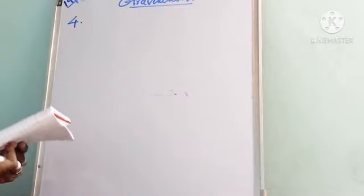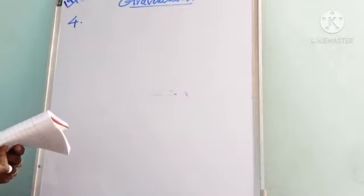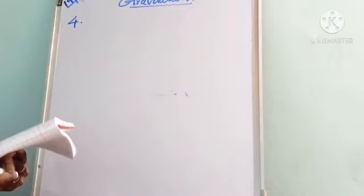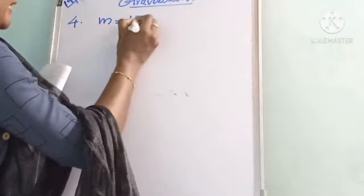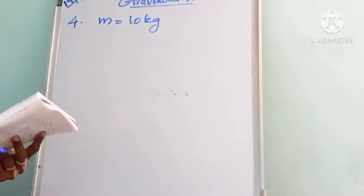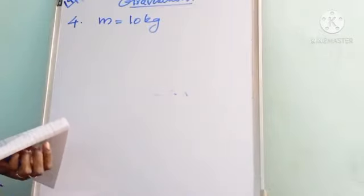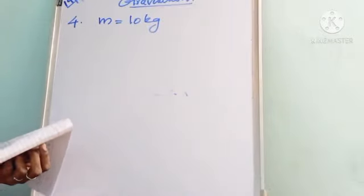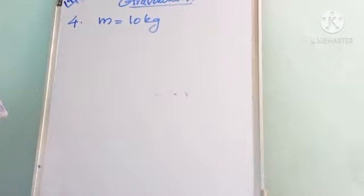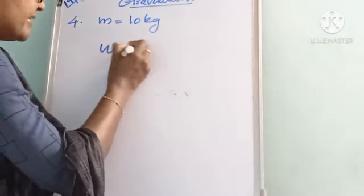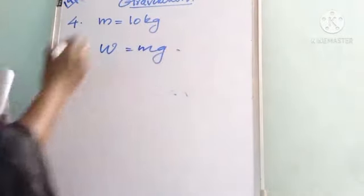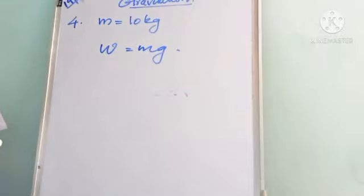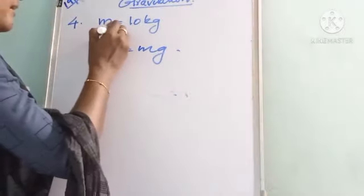Fourth question: mass of an object is 10 kg. What is its weight on Earth? Mass m = 10 kg. We use the equation W = m·g. The value of acceleration due to gravity g = 9.8 m/s².